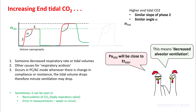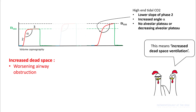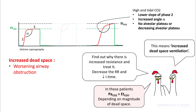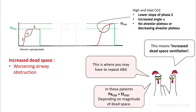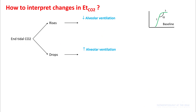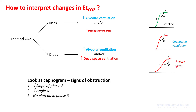Sometimes increasing end-tidal CO2 can also be seen in recirculation of carbon dioxide, such as in a leaky expiratory valve, or errors in measurement if there is water in the circuit — you can figure this out as the slope of phase 4 will be much gentler and the capnogram will not reach baseline. If you see a lower slope of phase 2 and increased angle alpha, that means increased dead space ventilation from airway obstruction. You can also check for auto-PEEP in these patients, and your peak minus plateau pressures will be increased, suggesting increased resistance.